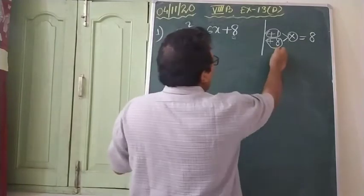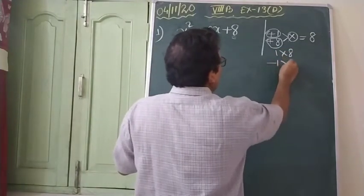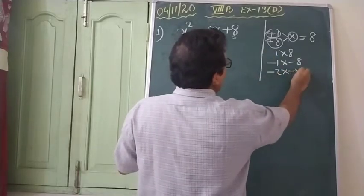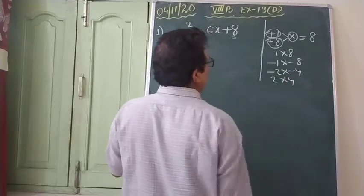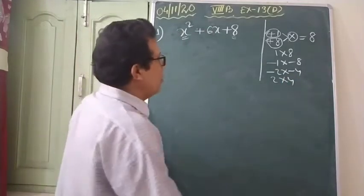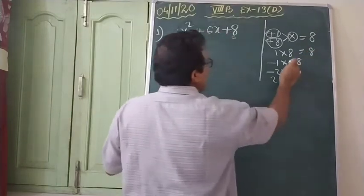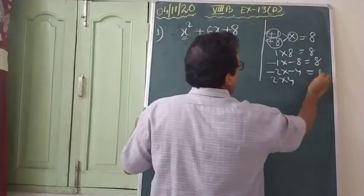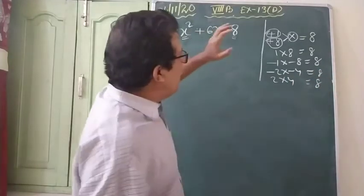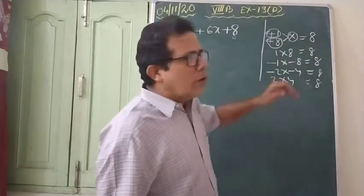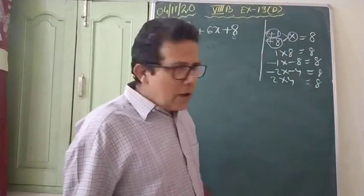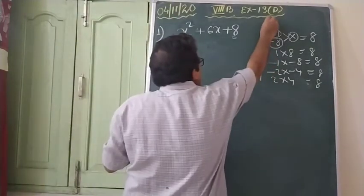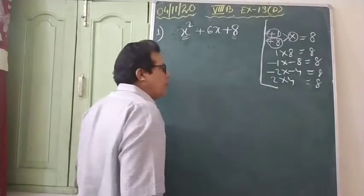What are the factors of eight? One × eight, minus one × minus eight, minus two × minus four, or two × four — these are the factors of eight. Because one × eight gives eight, minus one × minus eight also gives eight, and so do the others. So you have to find out all the factors of eight. If you practice a few problems, then there is no need to find out all the factors — directly you will be able to do it.